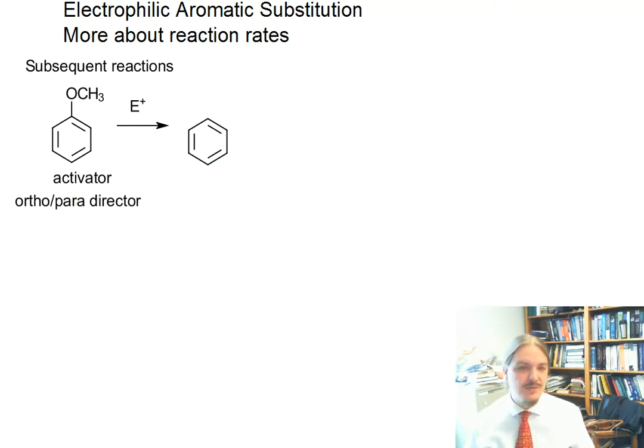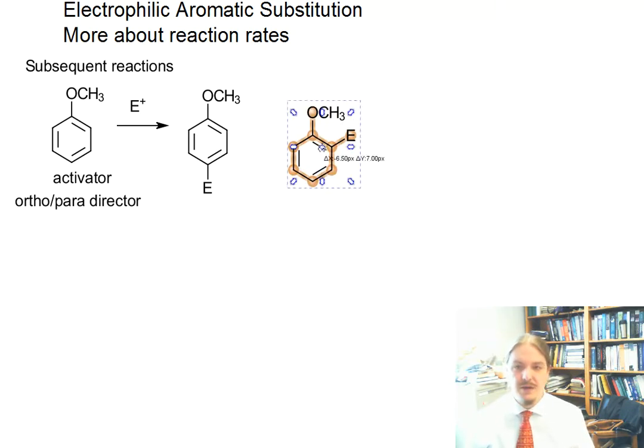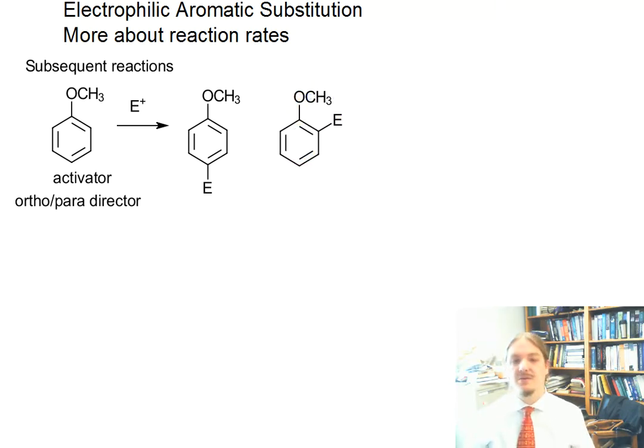And so that means that we know that the major products of this reaction are going to be substitution at para. And I'm listing para first on purpose. And as soon as I finish drawing ortho, you can hear about it. Are para and ortho. And usually para beats ortho.